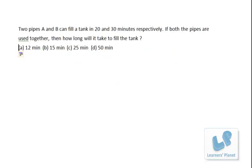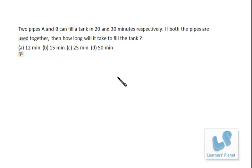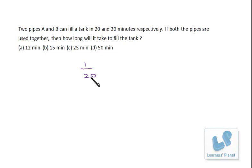Let's take the first question. If two pipes A and B can fill a tank in 20 and 30 minutes respectively, if both the pipes are used together, then how long will it take to fill the tank? The problem is quite similar to time and work, so we have to calculate the unit work. Pipe A can fill the tank completely in 20 minutes while working alone — that means 1/20th part of the tank will be filled per minute.